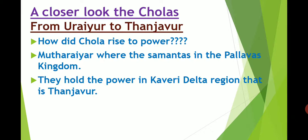We are now going to study about the Chola kingdom. Up till now we studied the kingdoms of North India. Now let's come towards South India. From Uriyar to Tanjava — how did the Chola kingdom emerge? Muthiyar were the Samantas in the Pallavas kingdom. Samantas are people who work under the king and help him in ruling his kingdom. Muthiyar held power in the Kaveri Delta region, that is in Tanjava.